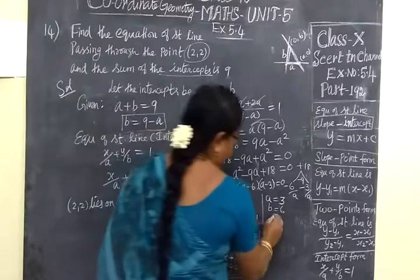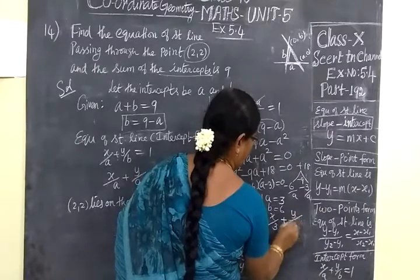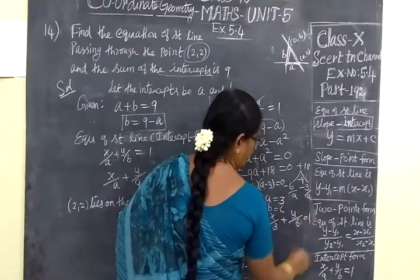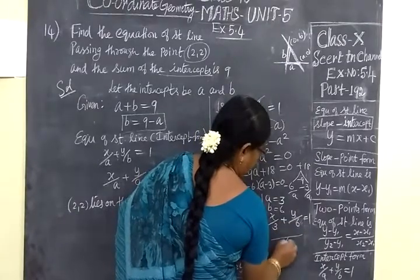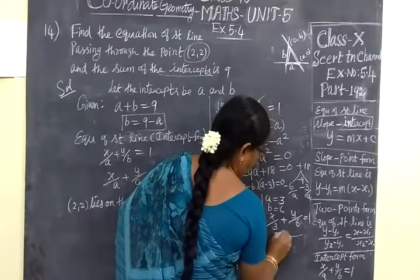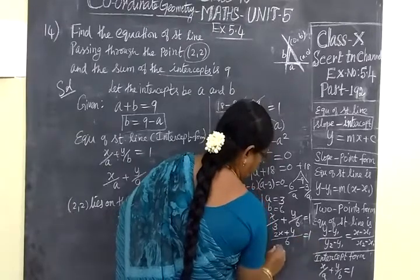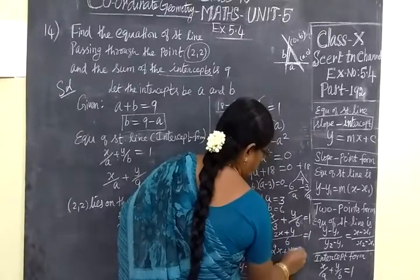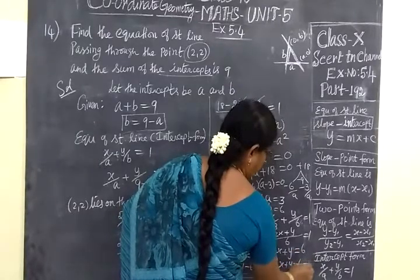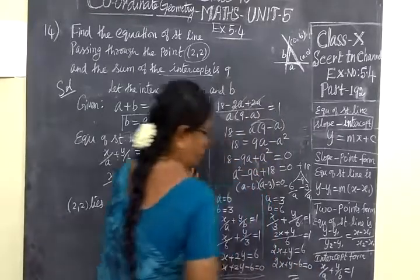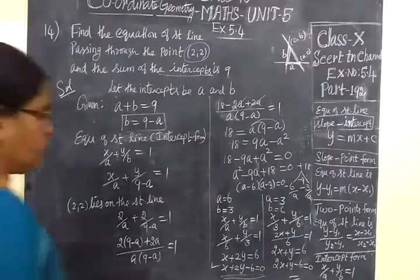Then another one. X by A, A is 3, plus Y by B is 6, equal to 1. X by 3 plus Y by 6 equal to 1. LCM is 6, so 2X plus Y equal to 6. And this becomes 2X plus Y minus 6 equal to 0. So the answer is 2X plus Y minus 6 equal to 0.